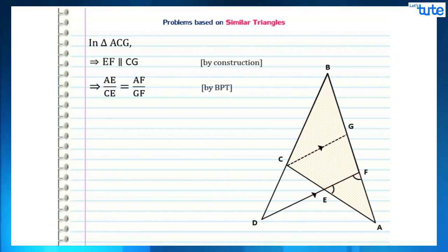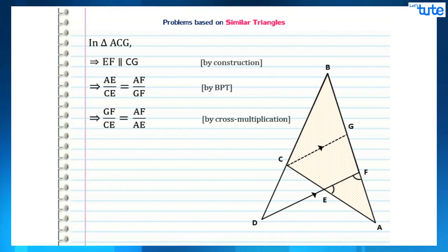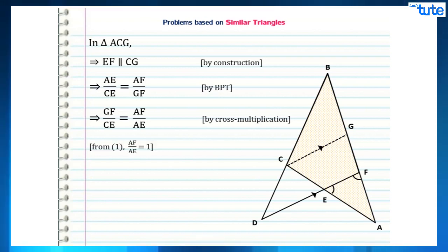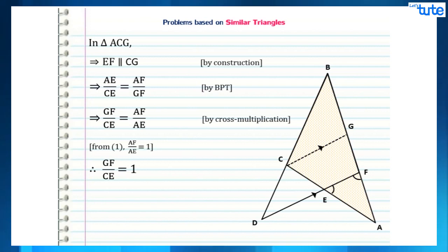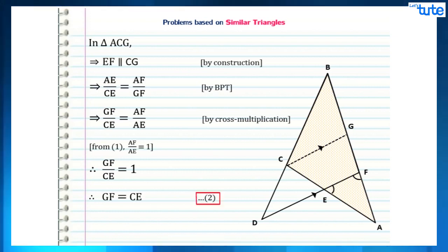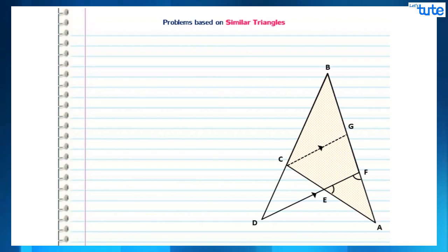Next, consider triangle ACG. In this triangle, AF is parallel to CG because by construction DF is parallel to CG. By applying BPT to triangle ACG, we get AE/CE = AF/GF. On cross multiplying, we get GF/CE = AF/AE. But from equation 1 we know that AF/AE = 1. Therefore, substituting this in the above equation, we get GF/CE = 1, which means GF = CE. We will consider this as equation 2.